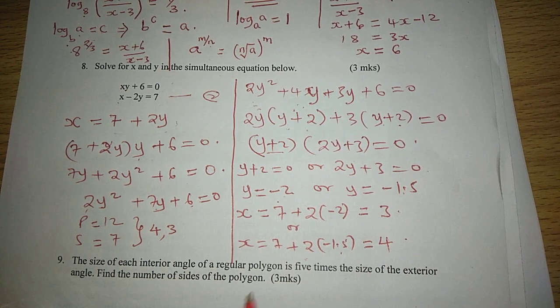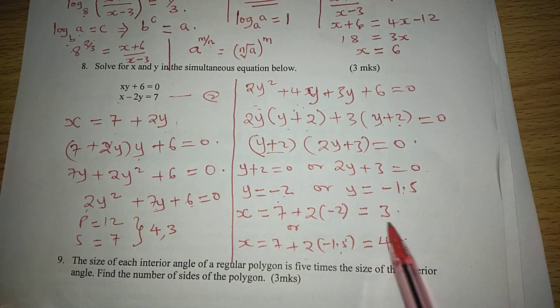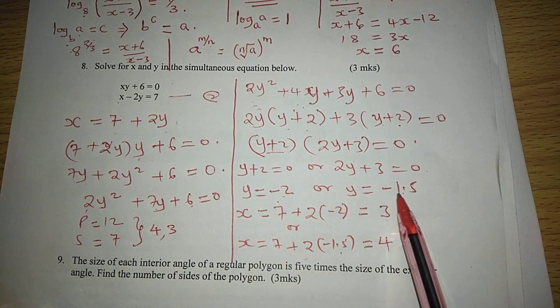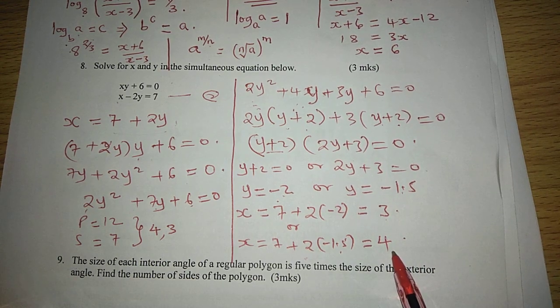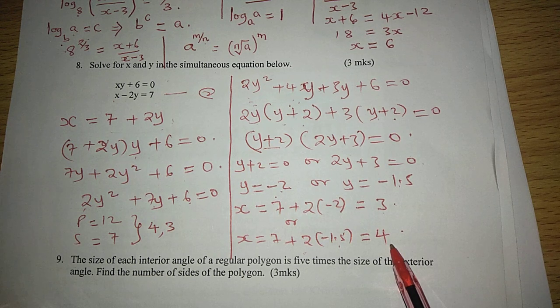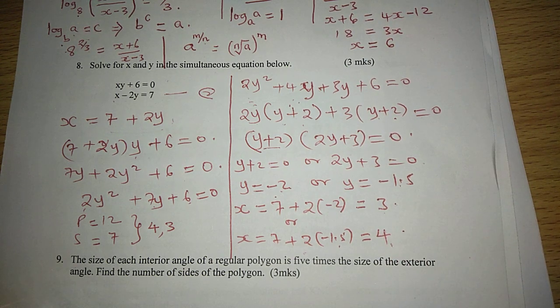Or rather, we can argue y equals negative 2 when x is 3, and y equals negative 1.5 when x is 4. So that is how we solve the quadratic simultaneous equation. Thank you for following. Subscribe to this channel and share the link.